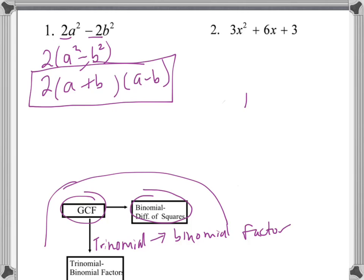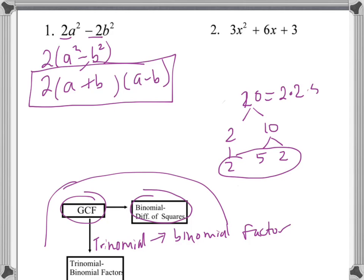This is similar to taking something like 20 and breaking it down into its prime factors. If I had 2 and 10, I'd have to break 10 down further into 5 and 2. So 20 equals 2 times 2 times 5. The same thing goes here: 2a² minus 2b² — this is a list of all the factors. Factor one is 2, factor two is (a + b), factor three is (a − b).